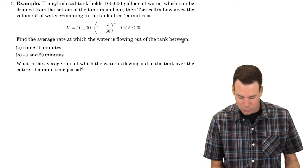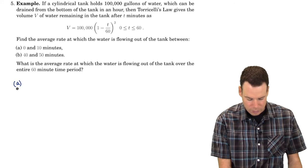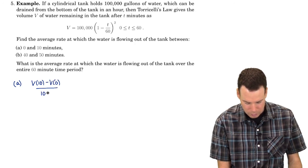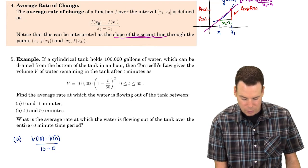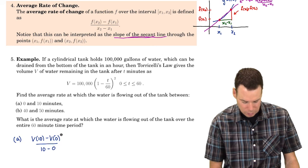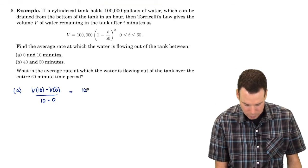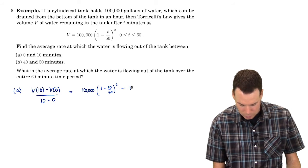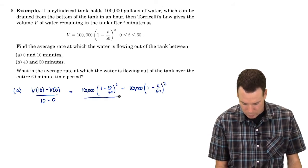We want to find the average rate of change at which water is flowing out of the tank between zero and ten minutes, between forty and fifty minutes, and over the entire sixty-minute period. From zero to ten, the average rate of change is V of ten minus V of zero, all over ten minus zero — we're just applying the average rate of change formula, using time instead of x.